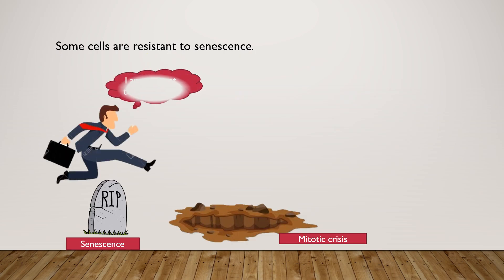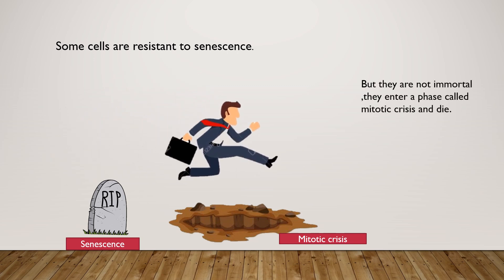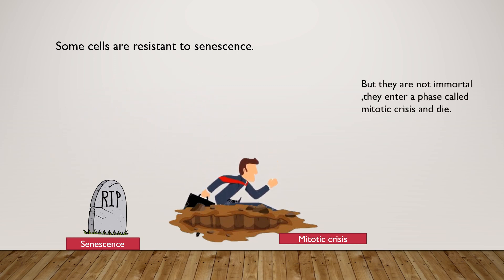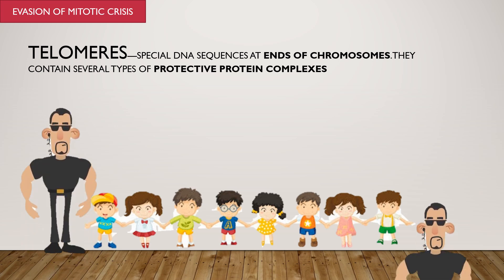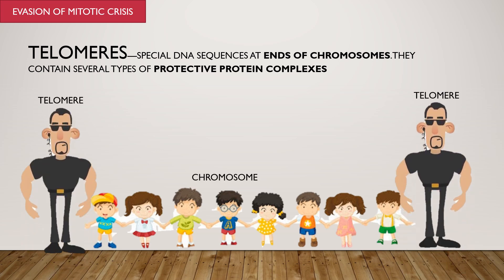Some cells are resistant to senescence with an increased replicative capacity, but these cells are not immortal. They enter into a phase called mitotic crisis and die. Mitotic crisis is nothing but the progressive shortening of the telomeres. Telomeres are special DNA sequences at the ends of the chromosomes, and several types of protective protein complexes are present in these telomeres.